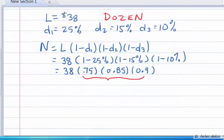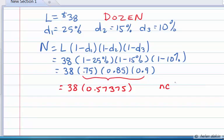Let's begin by calculating, multiplying the three factors first: 0.75 times 0.85 times 0.90. We're going to end up with, on our calculator, $38 times a factor of 0.57375. Please note that this actually represents the net cost factor of our three trade discounts. So we've got a net cost factor of 57.375%.